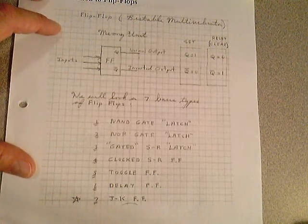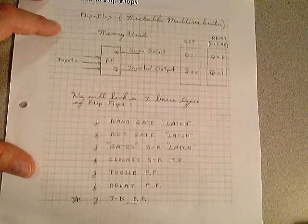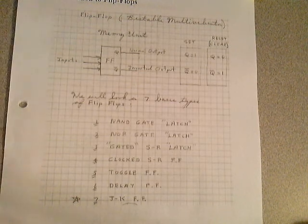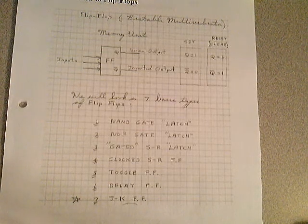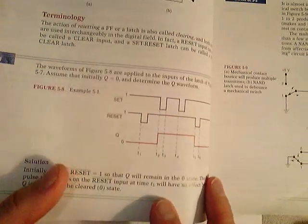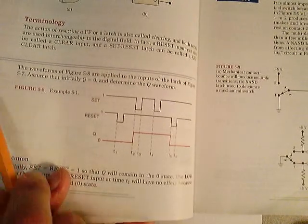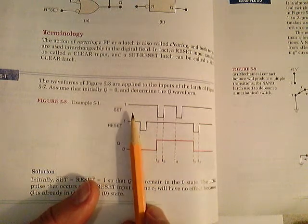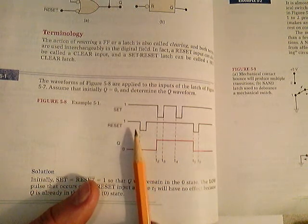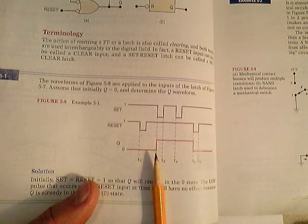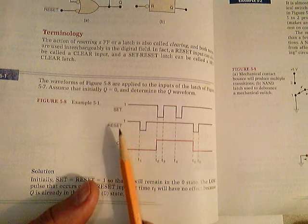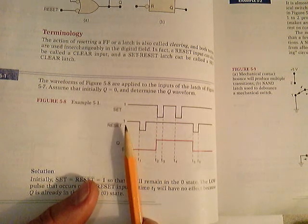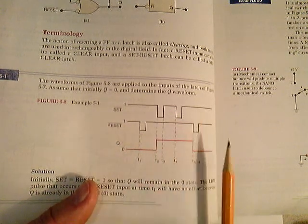You can see example 5.1 on page 224 in the textbook. It gives you an example of how this flip-flop works. So after I discuss the flip-flop, make sure you go back and look at example 5.1. What we have is a set input, a reset input, and what the Q output will be doing based on what the set-bar input and reset-bar input are doing. Make sure you understand this example.